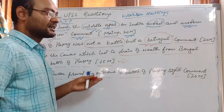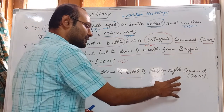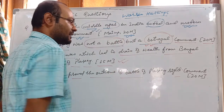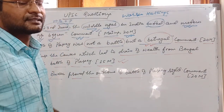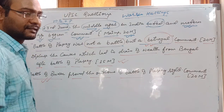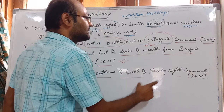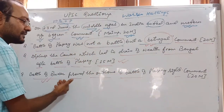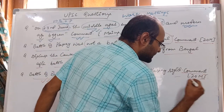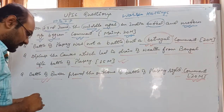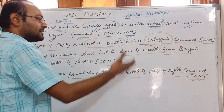The Battle of Buxar proved the outcome of the Battle of Plassey. In the Battle of Buxar, the English East India Company defeated three major powers: the Nawab of Bengal, the Nawab of Awadh, and Shah Alam II, the Mughal Emperor of Delhi. This proved British military superiority — their fighting techniques, guns, and battle tactics were superior. Even if Plassey had been a real battle rather than a betrayal, the English would still have won. These types of 20-mark questions can be answered easily with thorough lecture preparation.